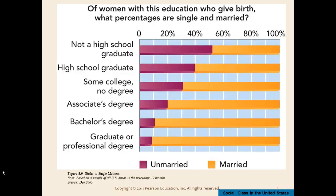Here's a graphic that correlates the amount of education a woman has with the percentage of women who have given birth and whether they're single or married. If a woman has had a child and holds a graduate or professional degree, she is far more likely to be married. With each step up the educational ladder, it appears more likely that a woman is married when she has children. Conversely, the less education one has, the more likely she is to be a single mother.